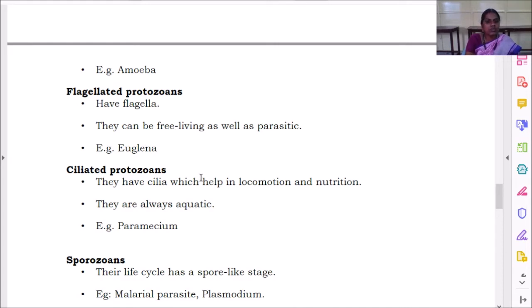Then ciliated protozoans. They have cilia which help in locomotion and nutrition. Cilia are hair-like or brush-like structures, flexible fibers. Those are called cilia-like structure.